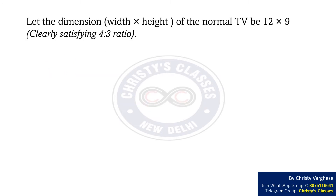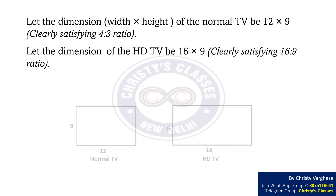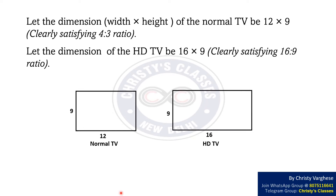Let the dimensions of the normal TV be 12 by 9, clearly satisfying the ratio 4 is to 3. Also let the dimensions of the high definition TV be 16 by 9, clearly satisfying the ratio 16 is to 9. We can visualize the above using the following diagram — this is for the normal TV and this is for the high definition TV.